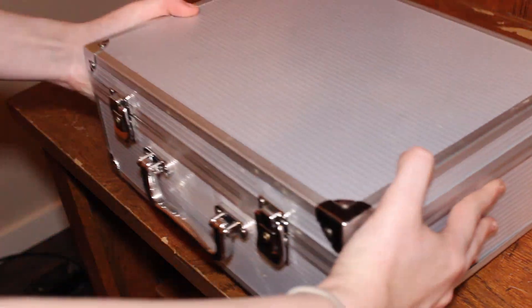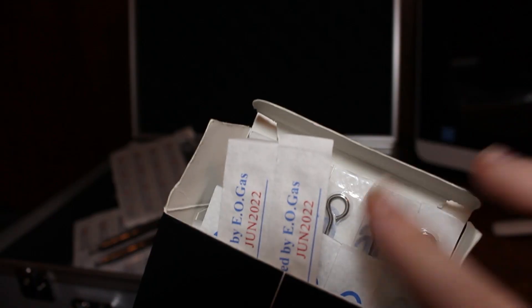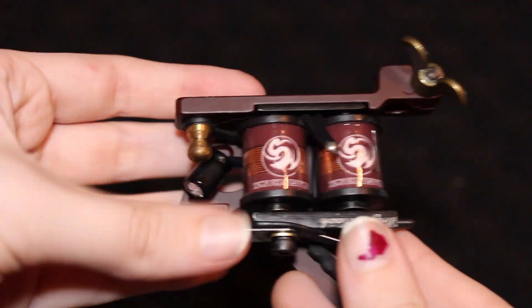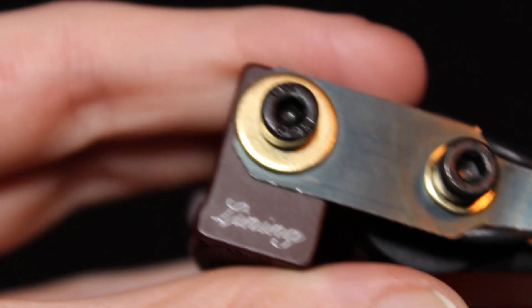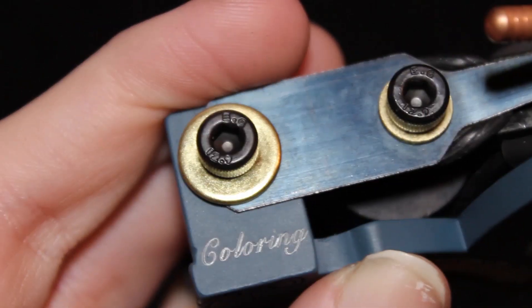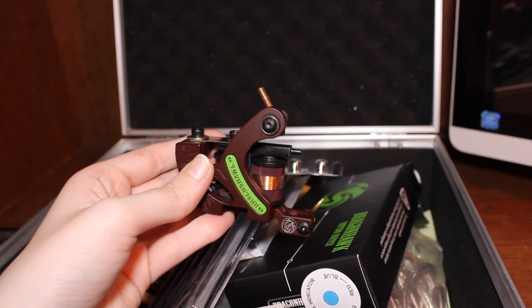First things first, we're going to take the machine out and establish what size needle and tube we're going to need. I've selected a lining machine to outline the tattoo. Other tattoo machines include fine lining, shading, and coloring. These each have different uses.